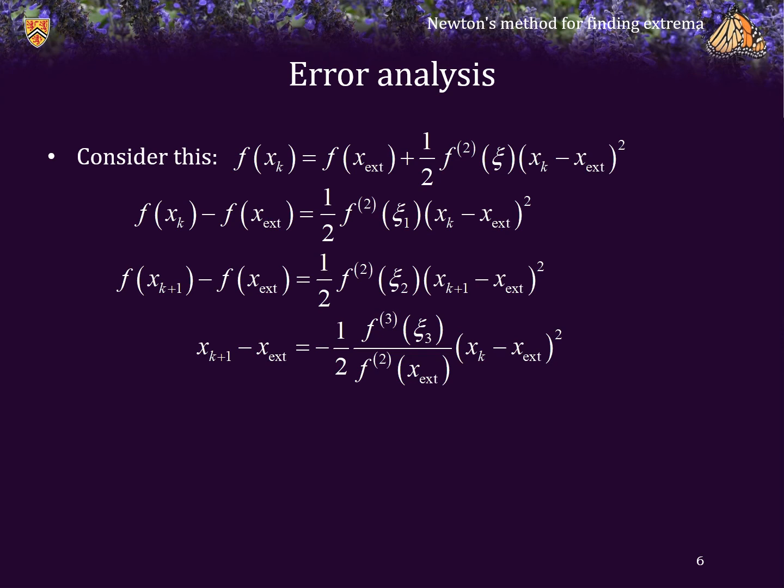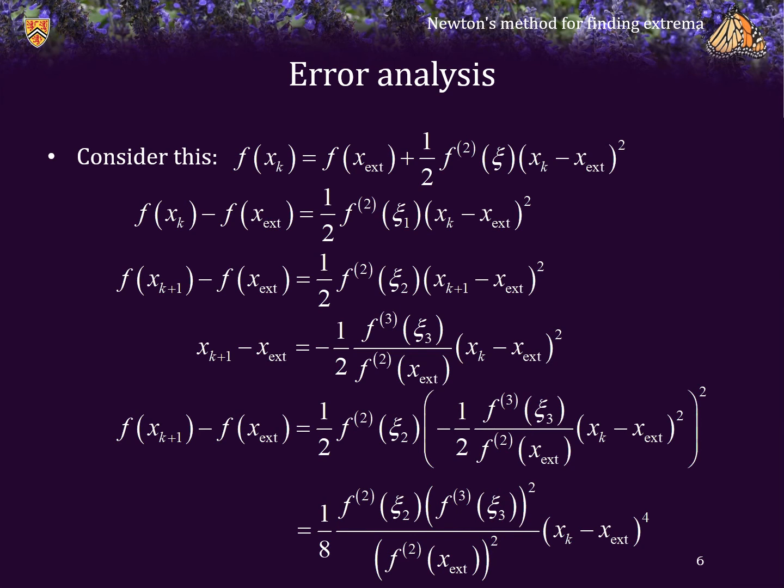We can expand that out. Consequently, we see that the error in the actual value of the maximum or minimum drops according to the error as to how close we are raised to the power 4. What this suggests is that we're actually going to converge very quickly to the value of the extreme point.